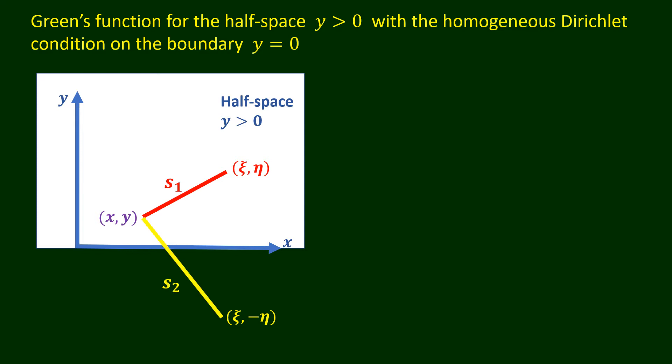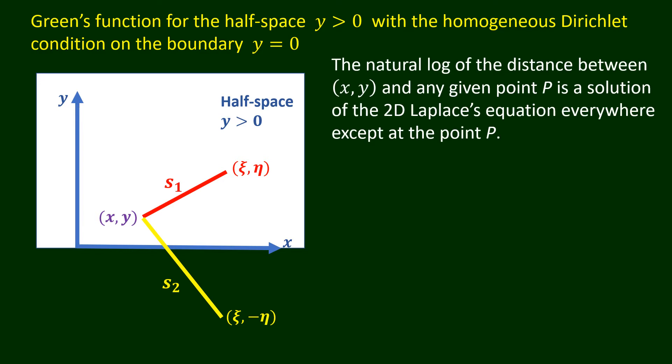The natural log of the distance between the point (x, y) and any given point p is a solution of the two-dimensional Laplace's equation everywhere, except at the point p. Noting that s1 equals s2 at y equals 0, we take capital Phi star equals a times the natural log of s2, and choose the constant a to satisfy the condition capital Phi equals 0 at y equals 0.